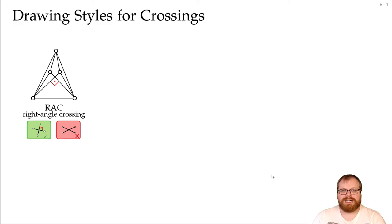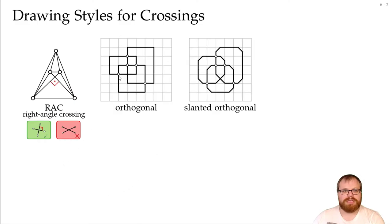There are many drawing styles we can do for the crossings when we have identified those graph classes. The most prominent one is the RAC drawing, where we have right angle crossings. Special cases of those are orthogonal drawings, where we automatically have right angle crossings, or slanted orthogonal drawings. Here at every vertex we only use vertical and horizontal segments.